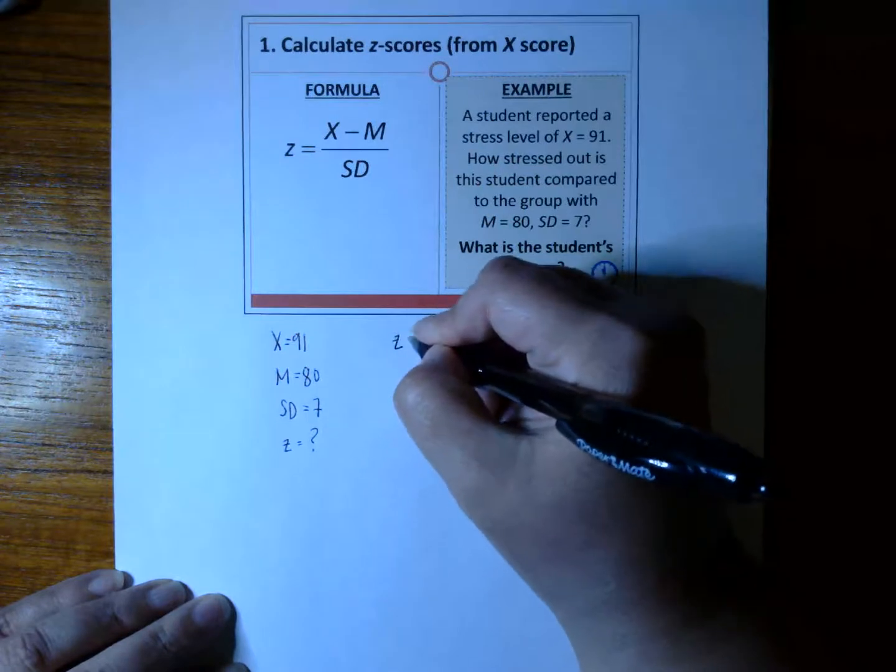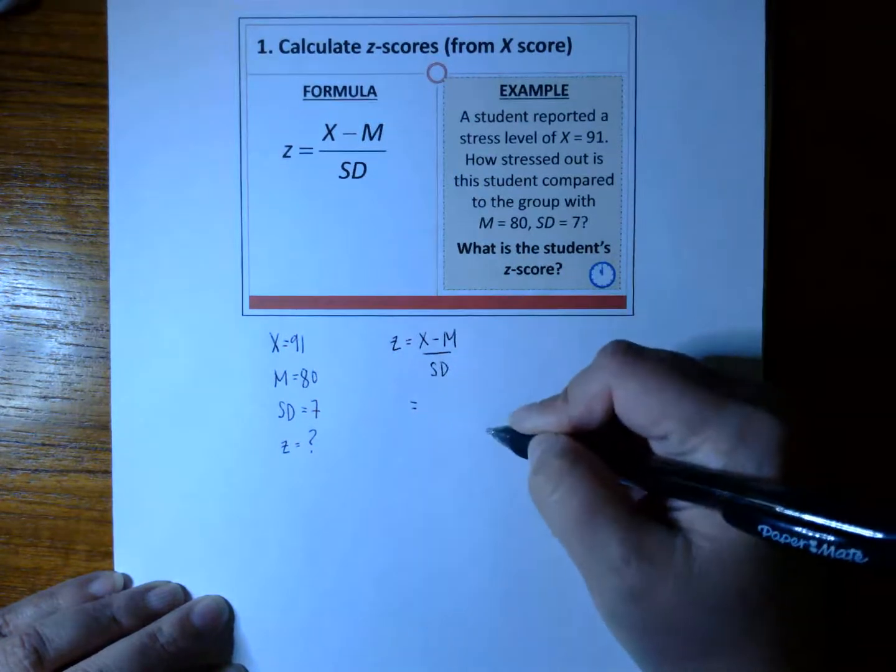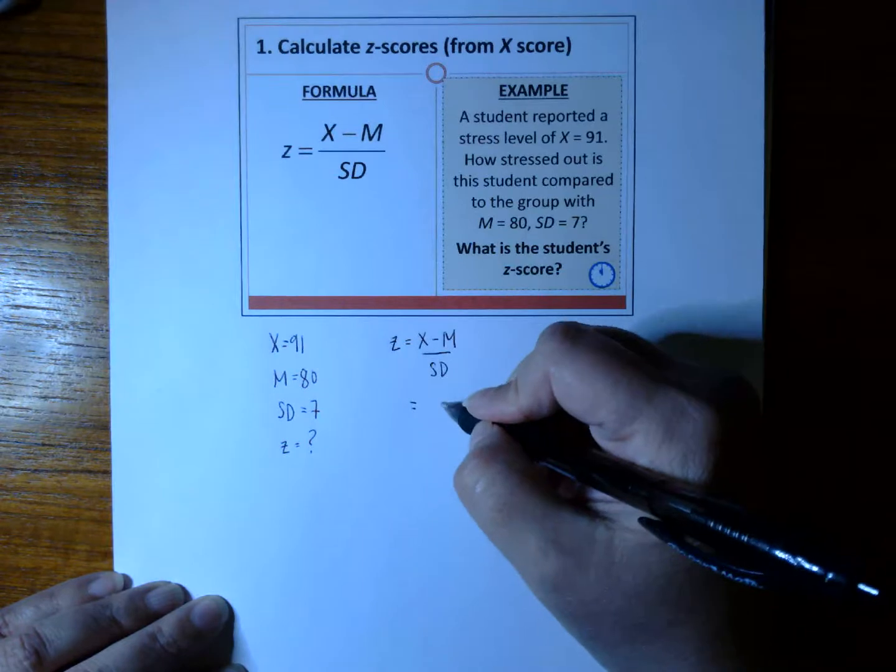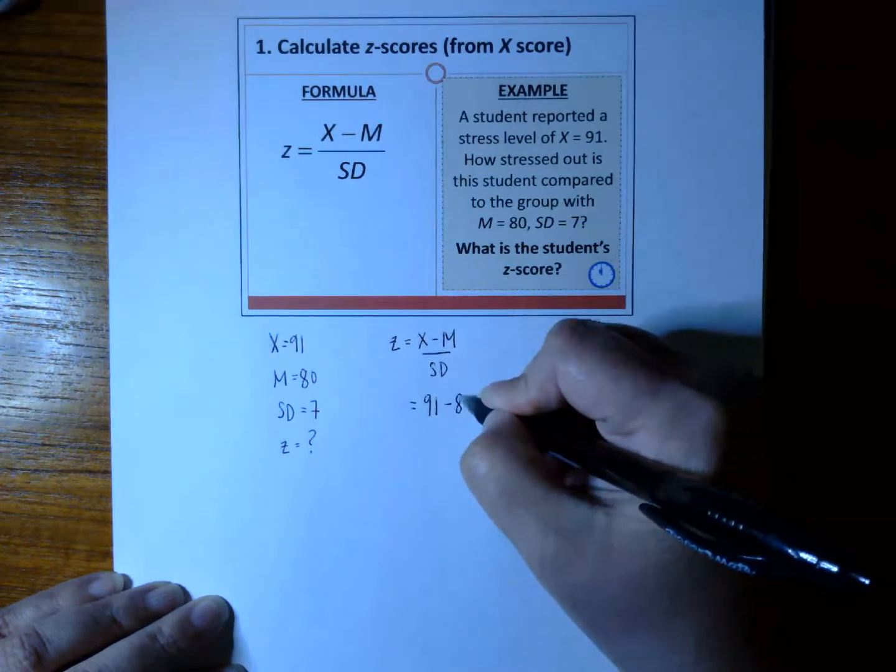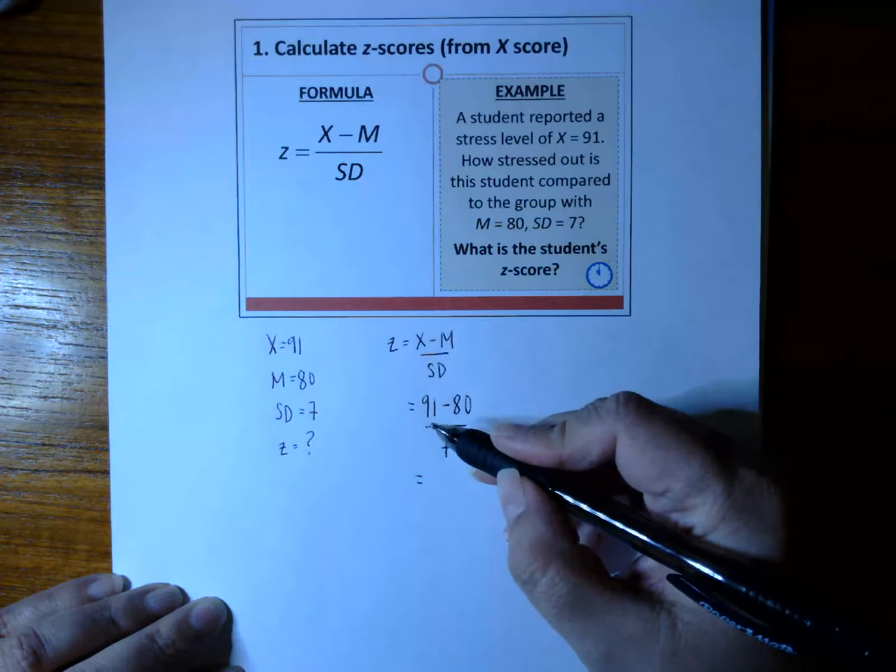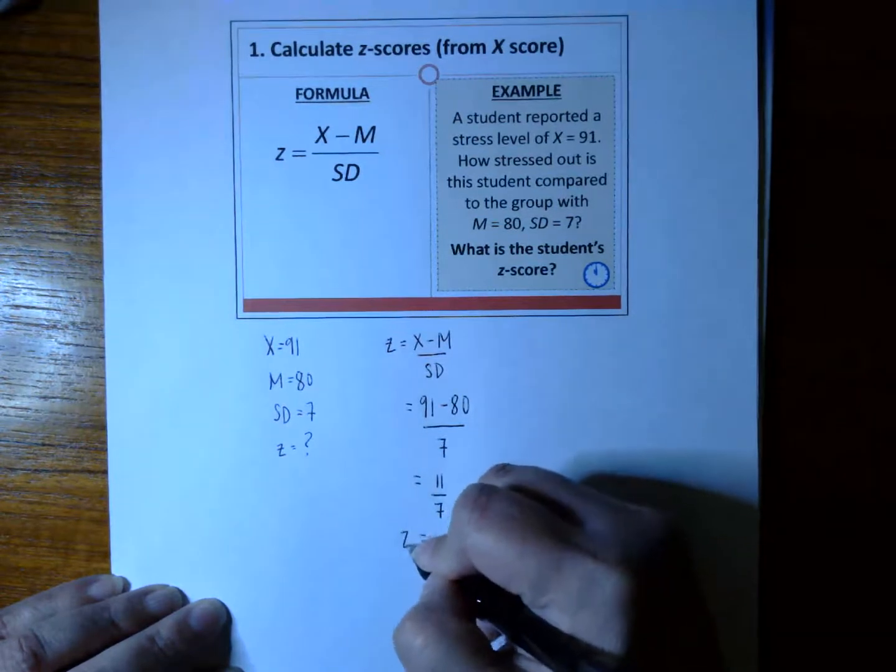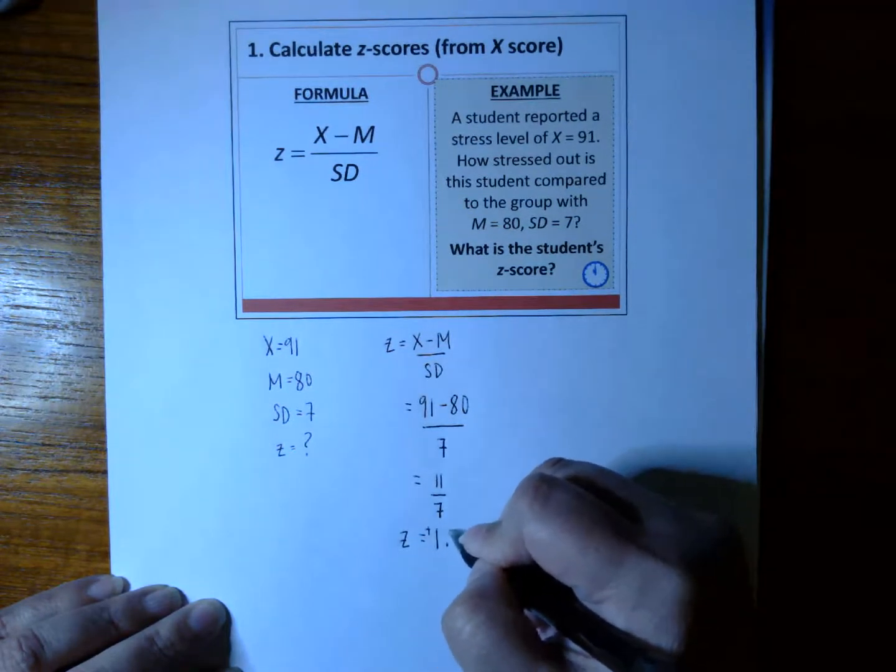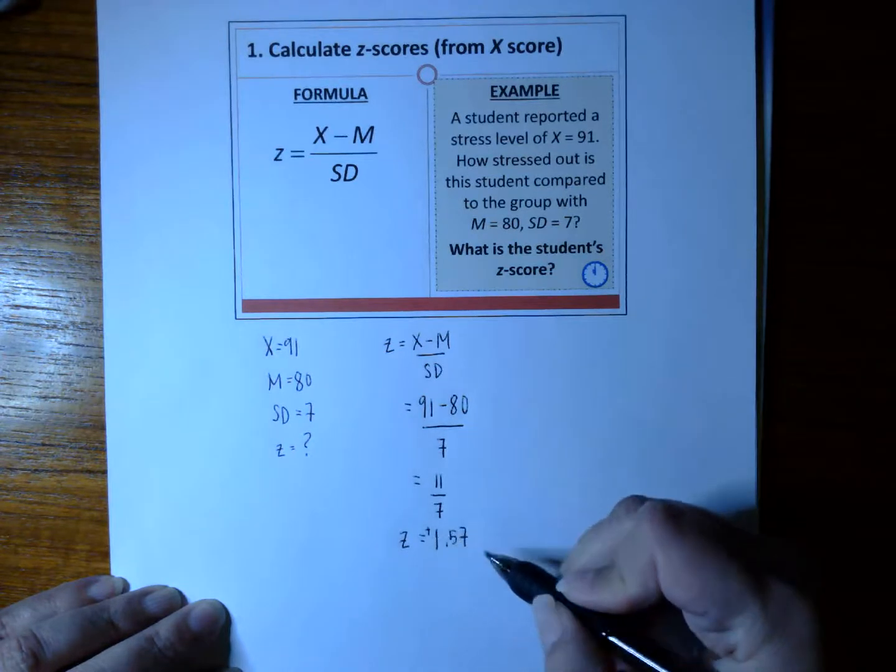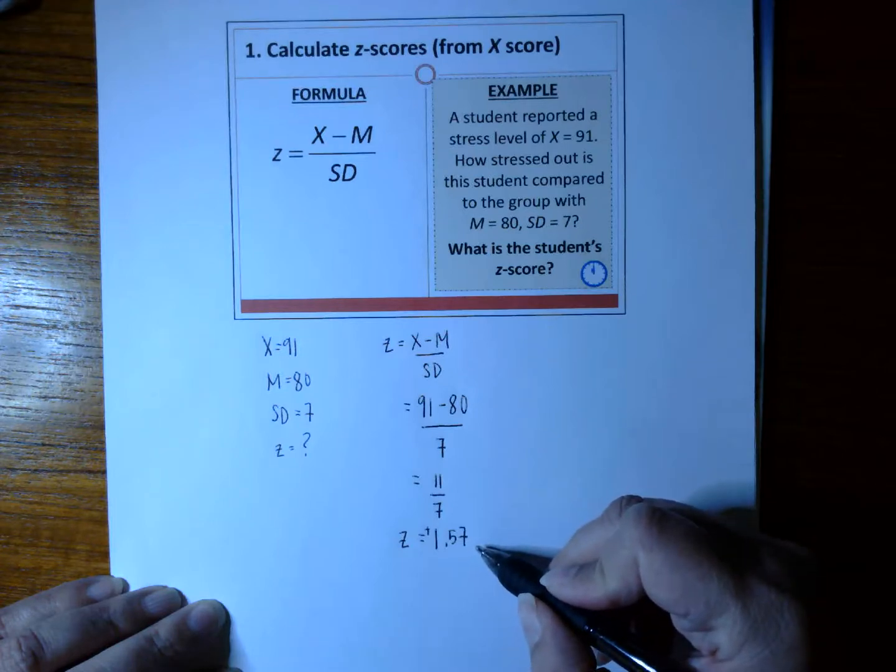We're looking for a Z-score. Let's start with our formula: Z equals X minus M over SD, and then all we have to do is plug in the numbers. X is 91, mean is 80, and SD is 7. 91 minus 80 gives us 11, and 11 divided by 7 gives us 1.57, but what's most important here is it's a plus 1.57. That plus tells us that our score is above the mean. In other words, the student's Z-score was above the mean by 1.57 standard deviations.